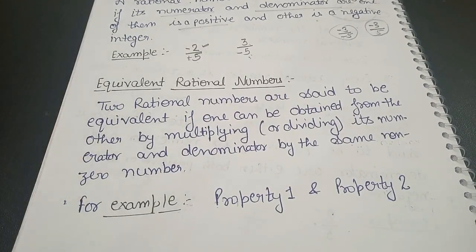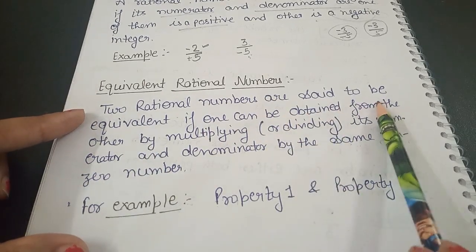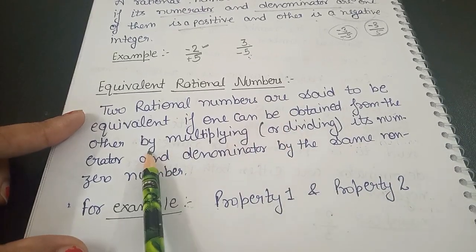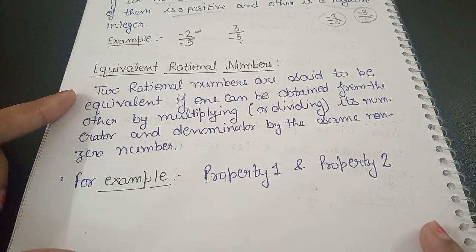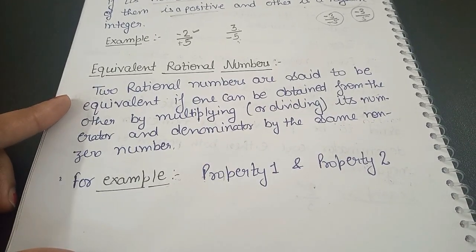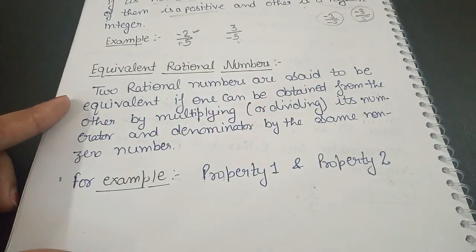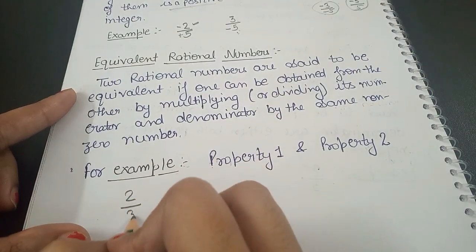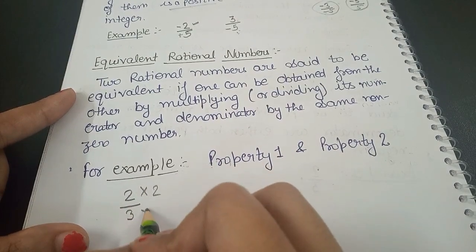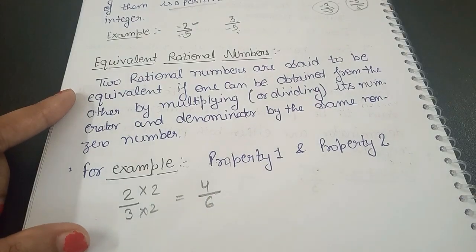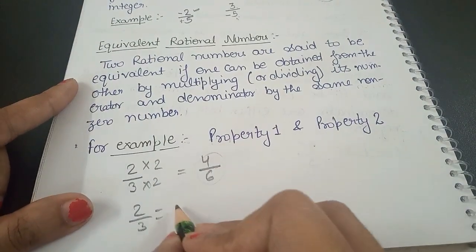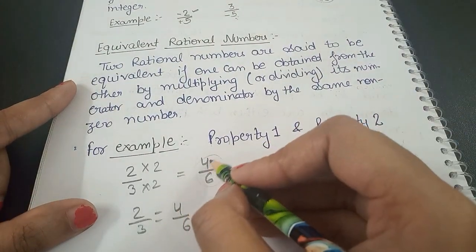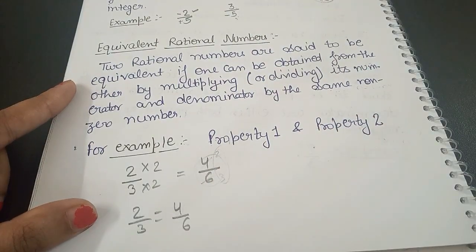Now let's discuss equivalent rational numbers. Two rational numbers are said to be equivalent if one can be obtained from the other by multiplying or dividing its numerator and denominator by the same non-zero number. For example, take 2/3 and multiply both numerator and denominator by 2: we get 4/6. So 2/3 is equivalent to 4/6.